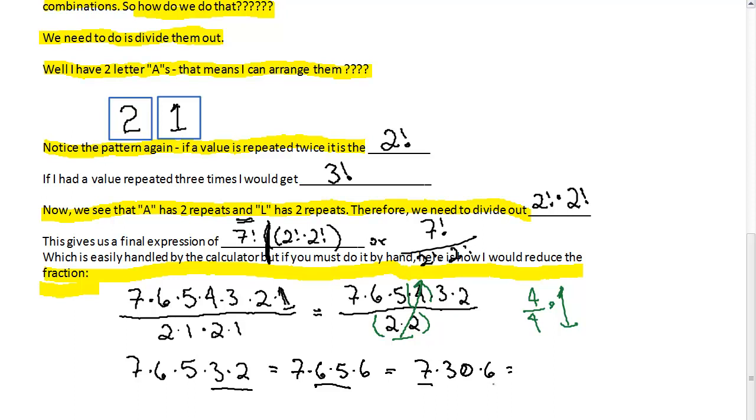And then go ahead and put the seven and the six together. So you have 42 times 30. And the reason I did that is because the zero is just going to go at the end. And then three times two is six. And three times four is 12. And so I get a final answer of 1,260 possible combinations.